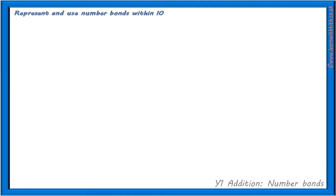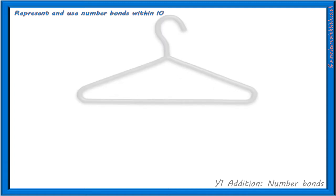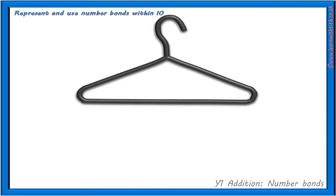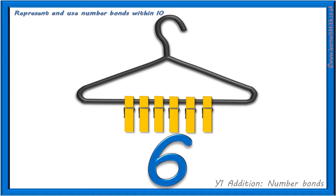For the remainder of this video, you will have the opportunity to investigate the numbers 6, 7, 8, 9 and 10 in the same way. Pause the video while you investigate each number, then play the video to compare your findings with ours. Let's start with 1, 2, 3, 4, 5, 6 pegs. Off you go!